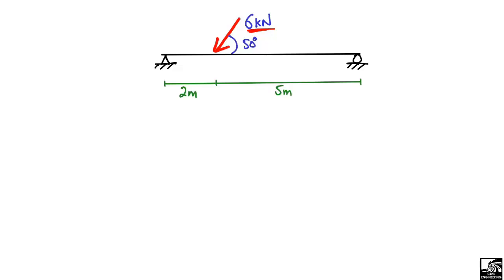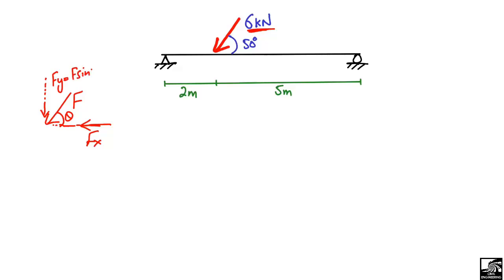When there is an inclined load acting on the beam, keep in mind that any force F always has two components. If this force is acting at an angle θ, the horizontal component is Fx = F·cosθ, and the vertical component is Fy = F·sinθ, where θ is the angle the force makes with the horizontal axis.